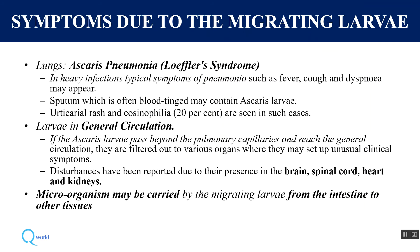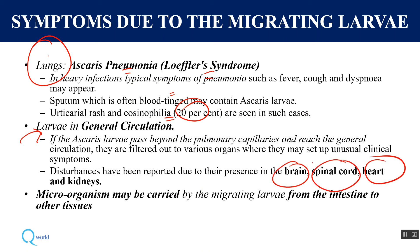Pathogenicity from the migrating larva: first, the larva reaches the lungs and causes pneumonia known as ascariasis pneumonia or Loeffler's syndrome. Symptoms include fever, cough, breathlessness, blood-tinged sputum, eosinophilia, and urticarial rash seen in 20% of cases. If the larva unusually enters the general circulation beyond the pulmonary capillaries, it causes ectopic lesions in the brain, spinal cord, heart, and kidneys. The larva may also carry other bacteria or microorganisms from the intestine to other tissues.